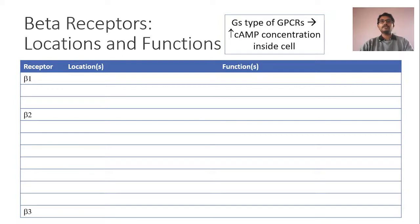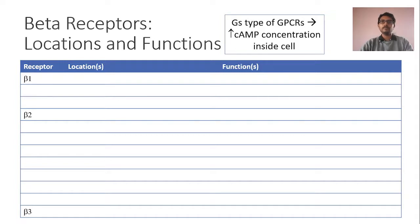When the agonist binds to Gs-type GPCRs, there is an increase in cAMP concentration inside the cell. When cAMP concentration increases inside a cardiac cell, the activity of the cell is going to increase. But if it is a smooth muscle cell, increase in cAMP concentration is going to cause relaxation of the smooth muscle. Remember that all types of beta-receptors are Gs-type GPCRs and upon activation, there is an increase in cAMP.